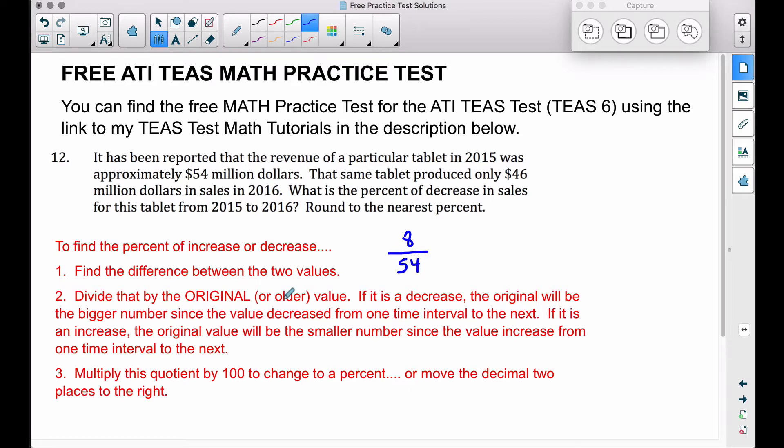This is where you have to be careful when you work these problems out, because the original, if you have a decrease, will be the bigger one since the value decreased from one time interval to the next. If you did have an increase problem, you would actually use the smaller value, because if something increases over time, the older value, the original value, will be the smaller value.